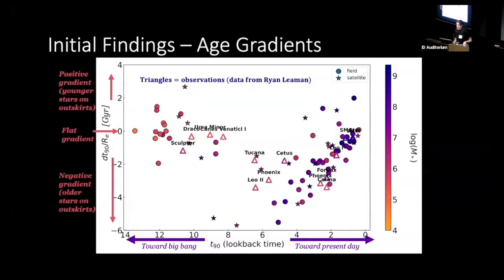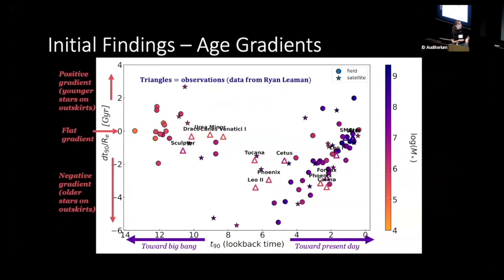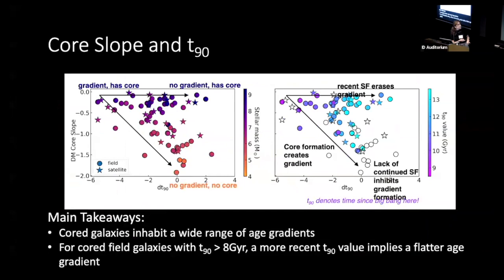Here are the initial findings. The age gradient is on the y-axis, and a negative gradient implies older stars are on the outskirts, while a flat gradient means older and young stars are about the same throughout. You see this U-shaped trend with T90. To investigate this trend further, we looked at dark matter core slope — if you recall Akash's talk about the dark matter profile, that's where we get this dark matter core slope.